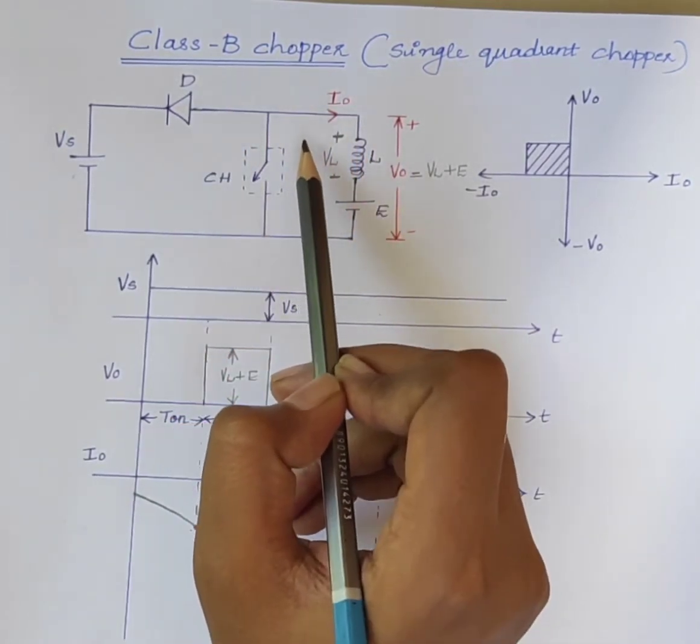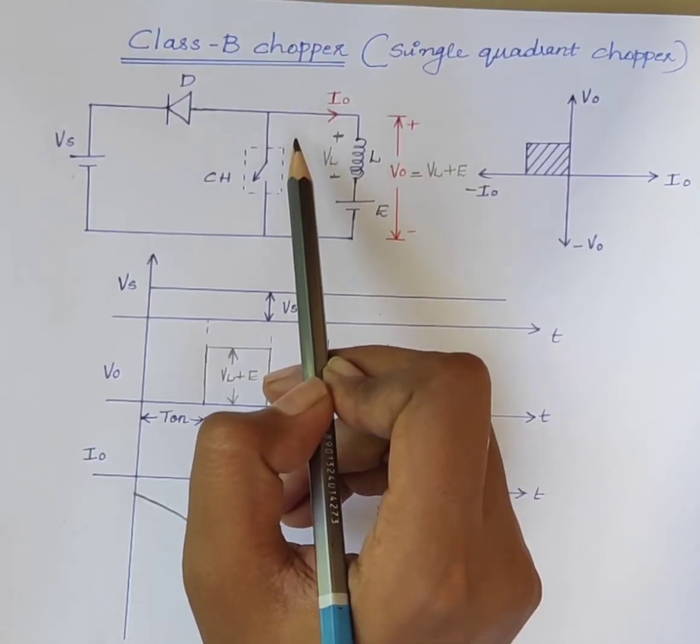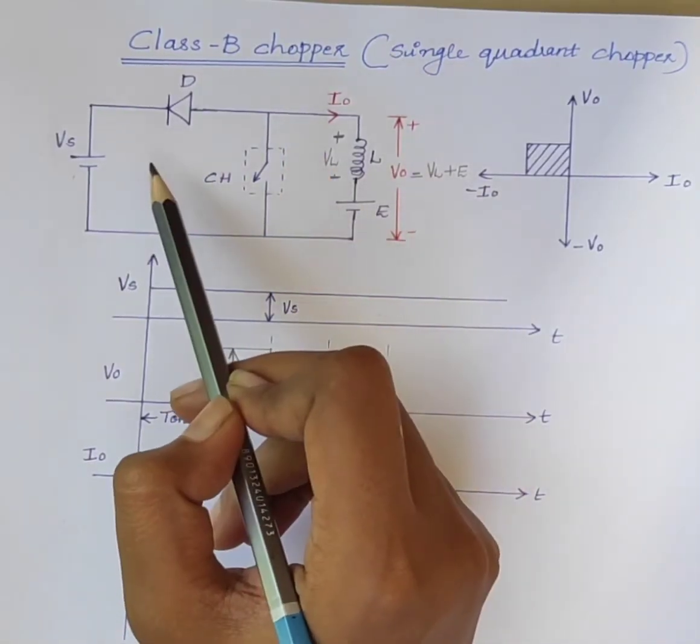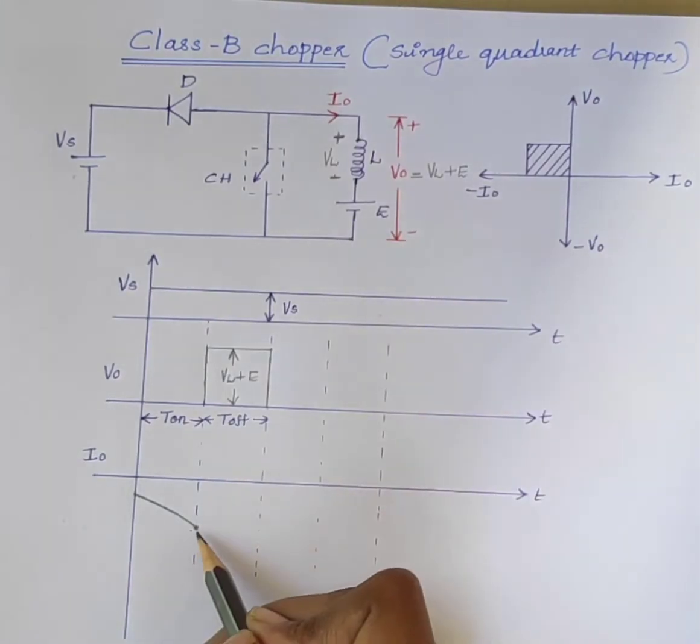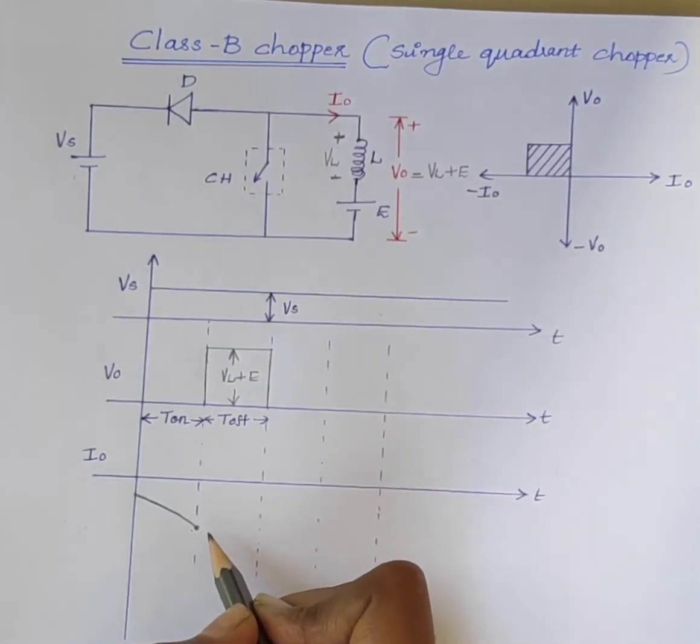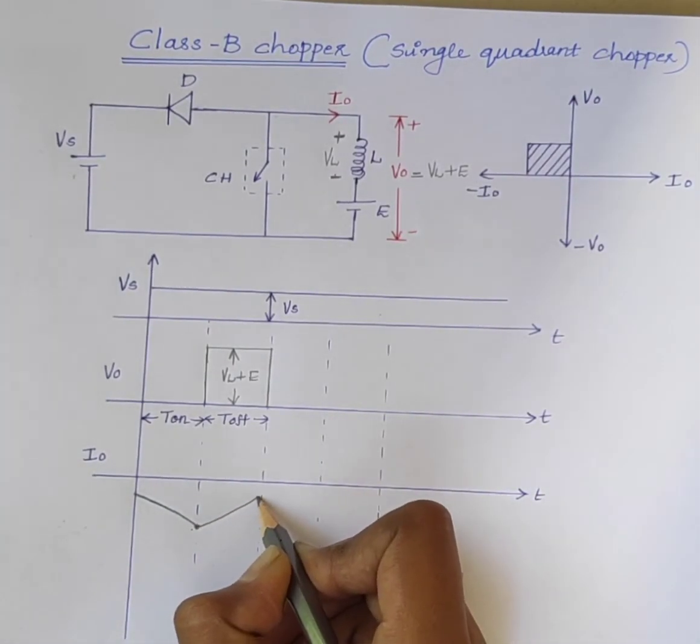During this time, the stored energy in the inductor is released. Therefore, the output current I0 decreases gradually.